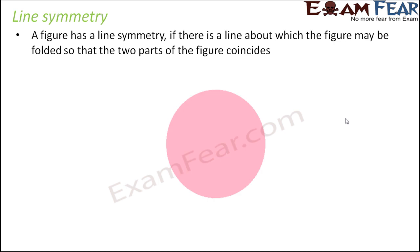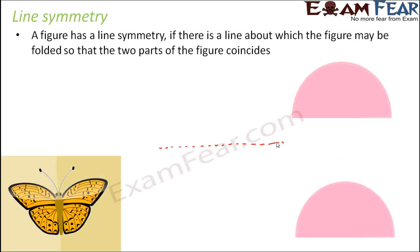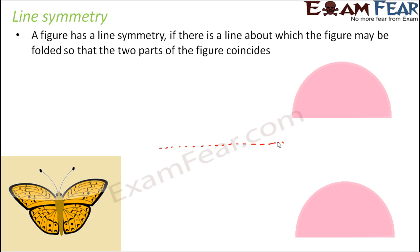If you look at this example — this is a circular sheet of paper. Do you think the circle possesses symmetry? Yes, of course. If you think of folding it along this line, we see that this line divides it into two identical halves which, when folded, cover each other completely. So the circular sheet of paper has line symmetry.